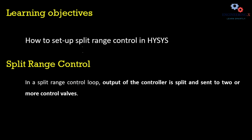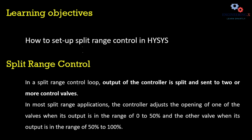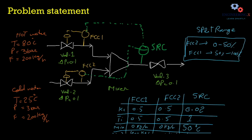Let's start first with split range control. In this control loop, the output of the controller is split into two or more percentages that are sent to the final control element — it could be a control valve or any other element — to control the process variable. In most split range applications, the controller adjusts the opening of one valve when its output is in the range of 0 to 50 percent, and the other valve when its output is in the range of 50 to 100 percent.